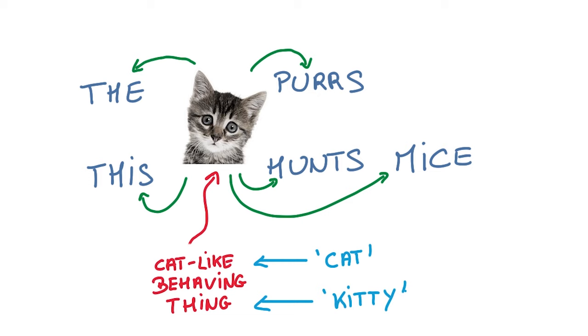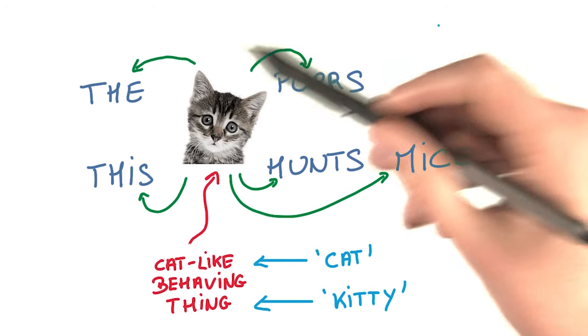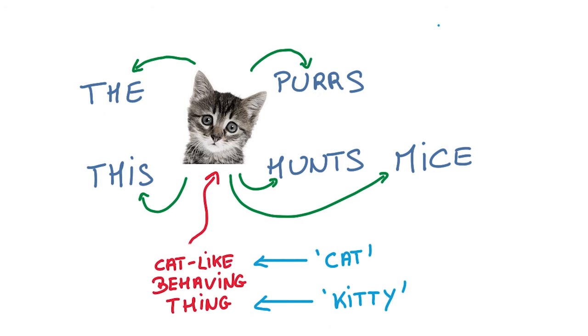The hope is that a model that's good at predicting a word's context will have to treat cat and kitty similarly and will tend to bring them closer together.